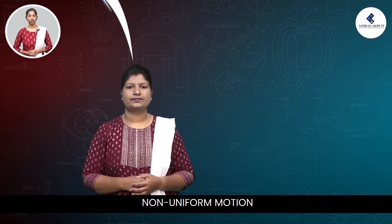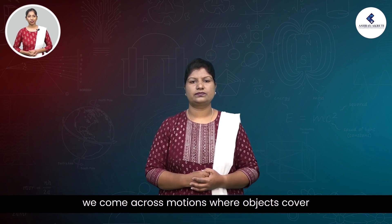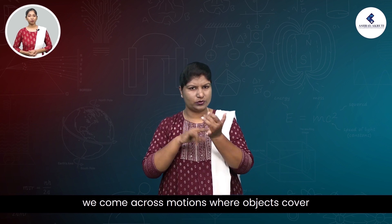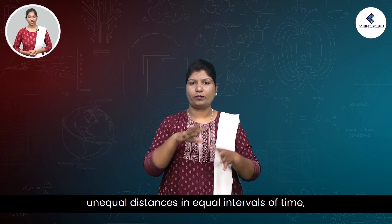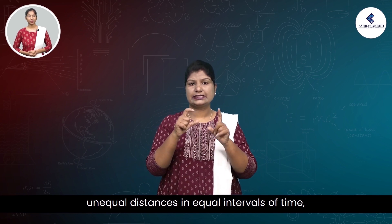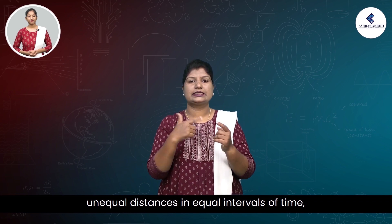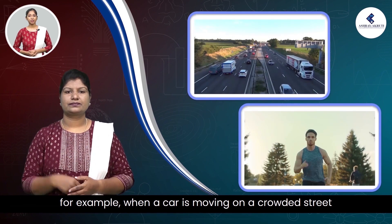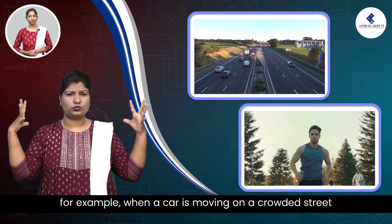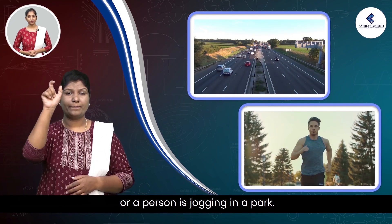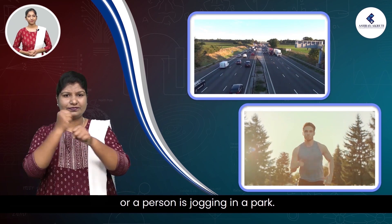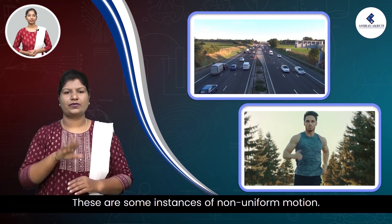Non-uniform motion. In our day-to-day life, we come across motions where objects cover unequal distances in equal intervals of time. For example, when a car is moving on a crowded street or a person is jogging in a park. These are some instances of non-uniform motion.